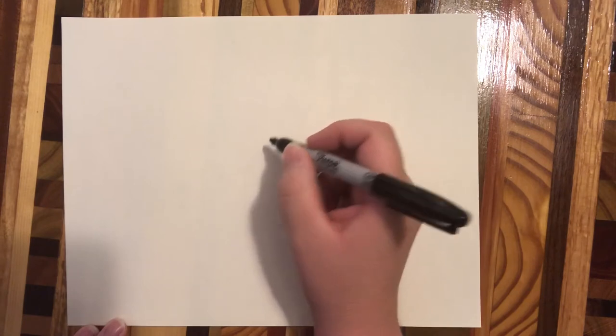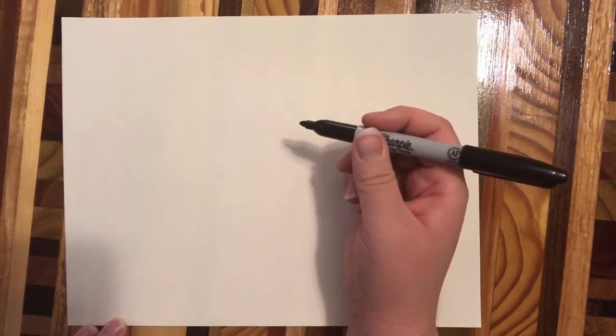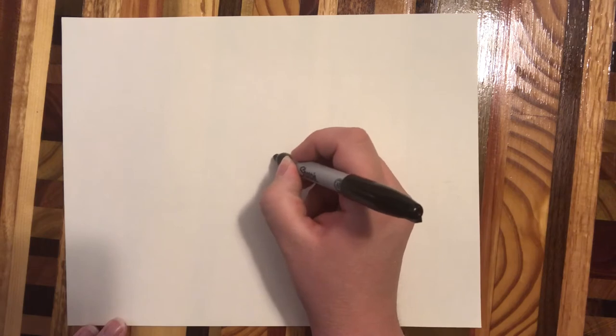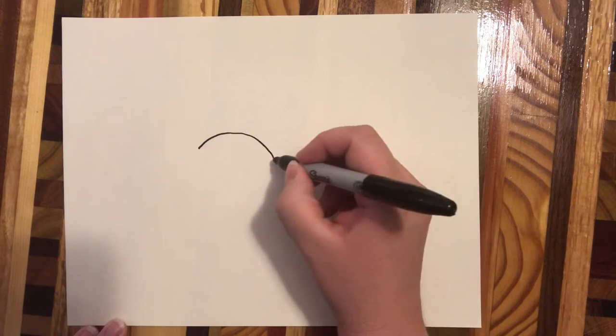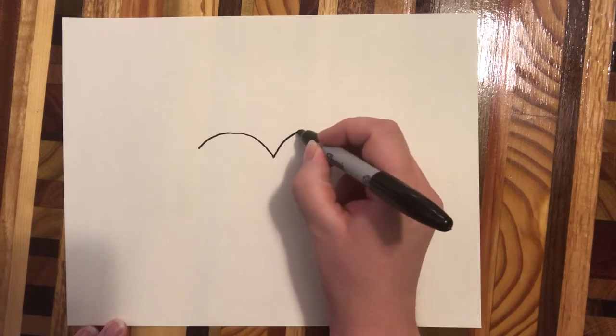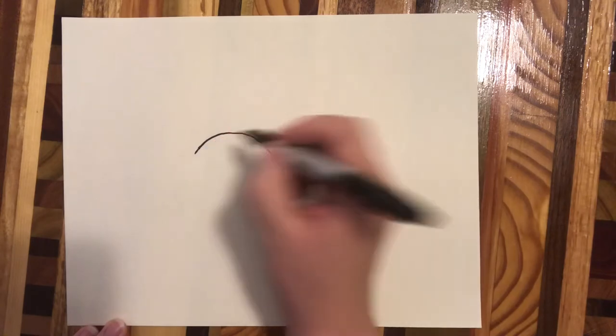First what we're going to do is we're going to draw the top of the heart. Now Miss Hoffman's doing this with a marker so that you can see my lines easier. You're going to want to do this with a pencil to start, but I'm going to start off by drawing the top of my heart which is going to look kind of like a wide letter M.